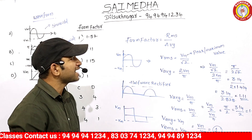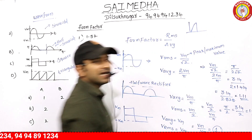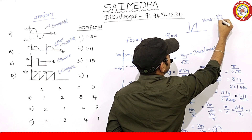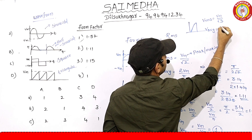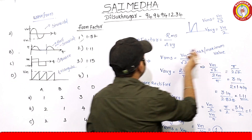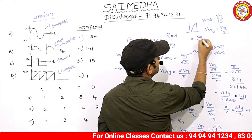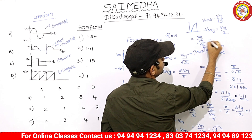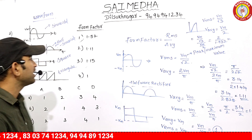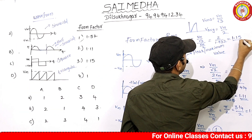The triangular waveform is very important. For the triangular waveform, RMS value equals Vm divided by root 3, and average value equals Vm divided by 2. Form factor equals RMS divided by average, which is (Vm/root 3) divided by (Vm/2), giving 2 divided by root 3, which is 2 divided by 1.732, approximately equal to 1.15.